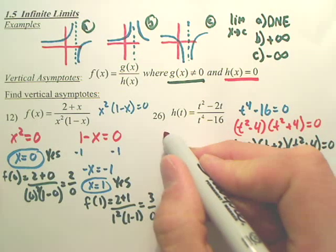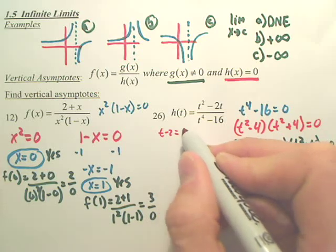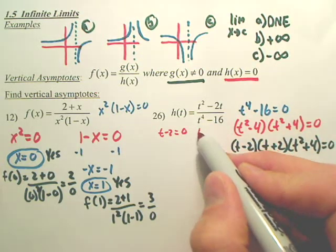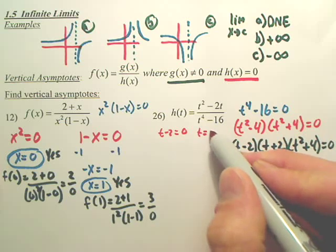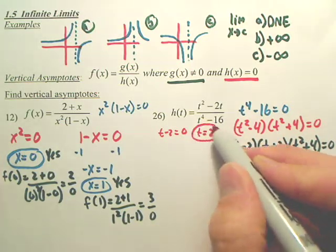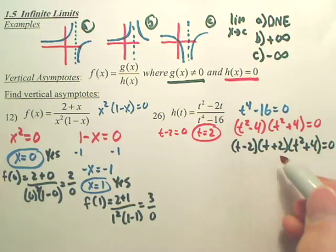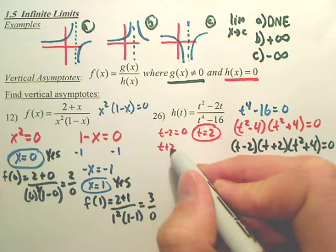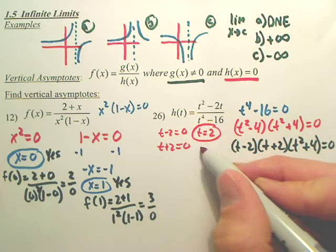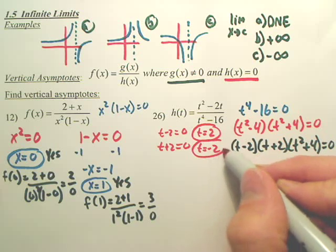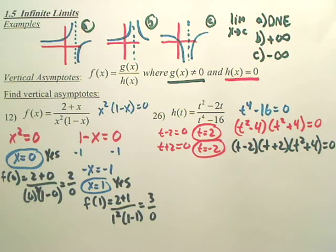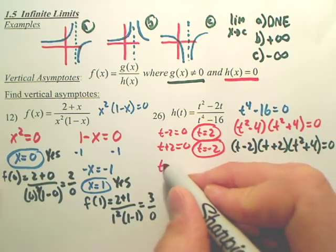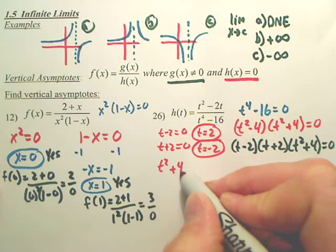So, let's do the first one. t minus two equals zero. That's when t equals what? Two. There's one possible vertical asymptote. Where t plus two equals zero, is t equals negative two. Okay, there's another possible vertical asymptote. And the last one is, where does t squared plus four equals zero? It'll never.